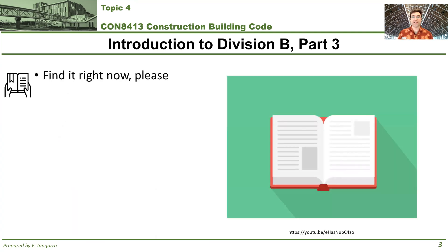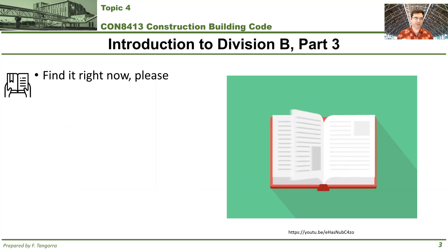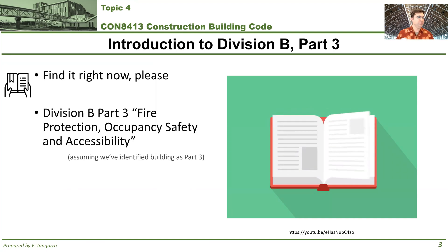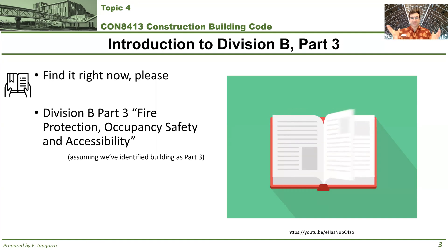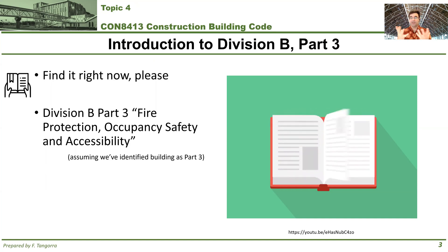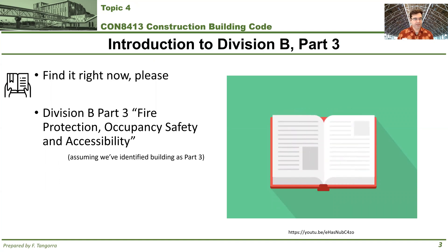Please take a moment and find it right now - put me on pause, I'll be here when you get back. Find Part 3 of Division B of the Ontario Building Code. You know that you've reached the right spot because it's titled Fire Protection, Occupancy Safety, and Accessibility. After having used what we learned in Topics 1, 2, and 3 to figure out where we should start looking, and having determined we're looking at a Part 3 building, we're going to start learning how to use certain portions of Part 3. First among them is going to be about determining the occupant load.